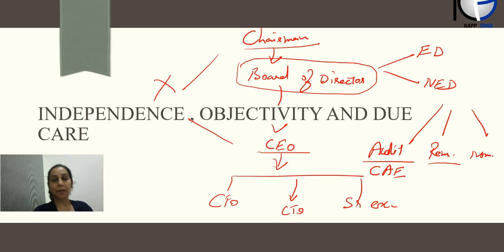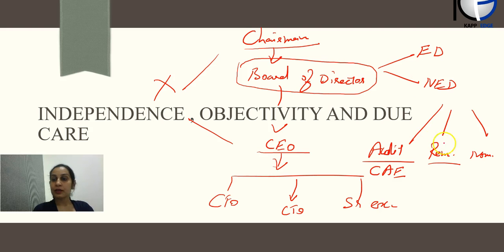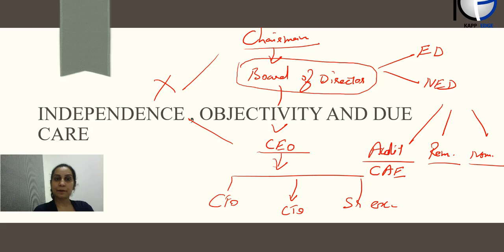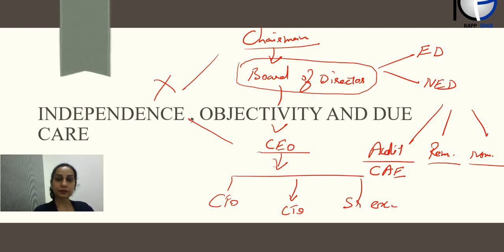If executive directors are overpaid, they are misutilizing shareholder's money; if underpaid, they will not be motivated to work. The remuneration committee decides the ideal salary for a given experience and skill set. The nomination committee ensures that the right people sit on the board — not necessarily family members of directors, but those with the skill set to run the business. The nomination committee recommends who should be nominated and what kind of skill set is needed on the board. This is how corporate governance works at the top level.